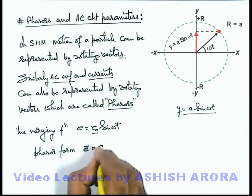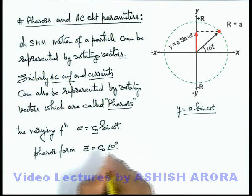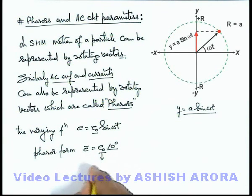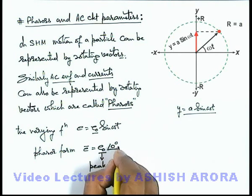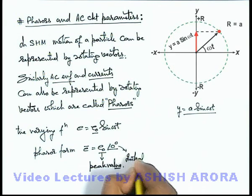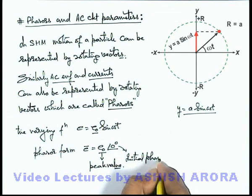And this is written as E_0 angle zero degree, where E_0 is giving us the peak value or amplitude of the physical quantity and zero is giving us the initial phase of this physical value at t equal to zero.